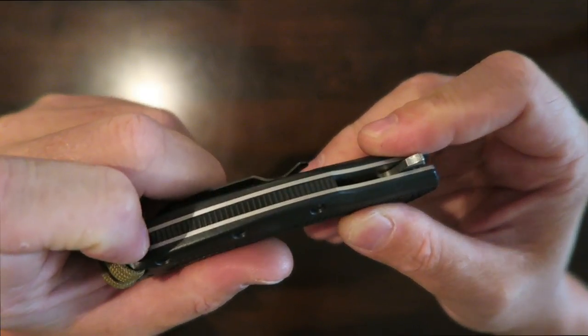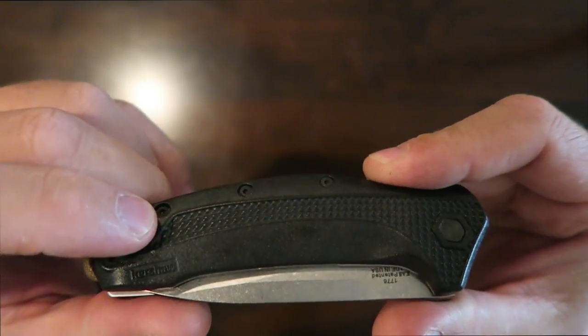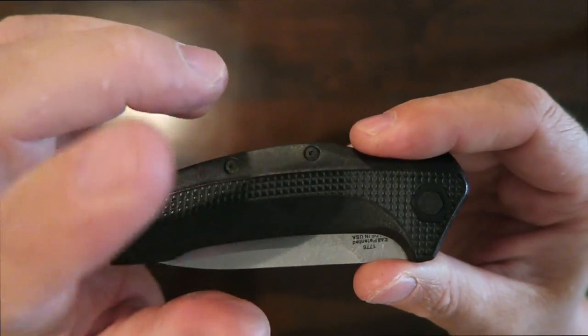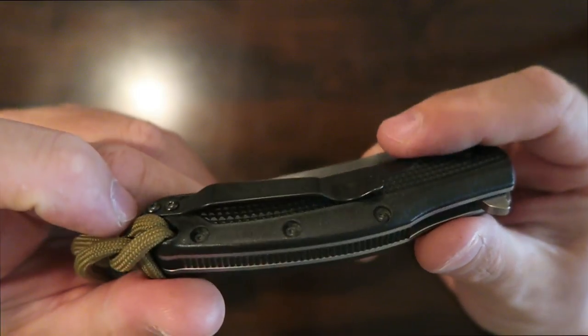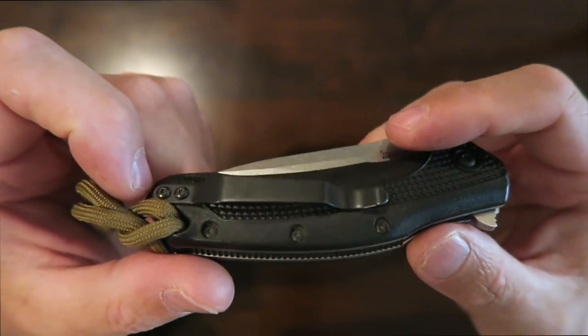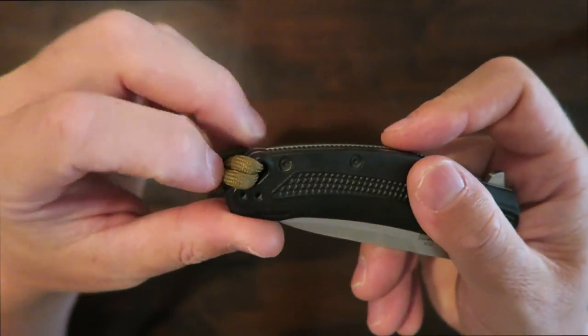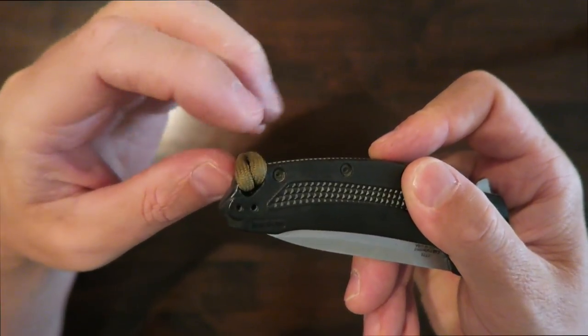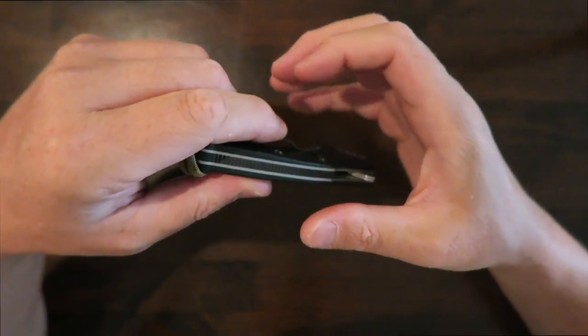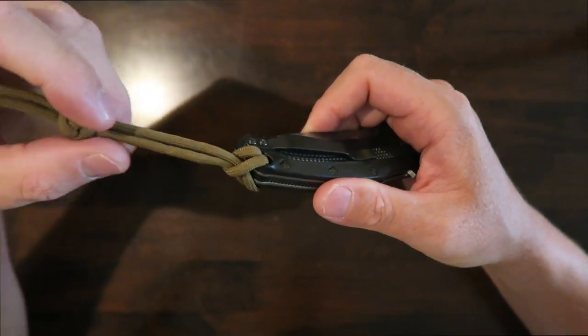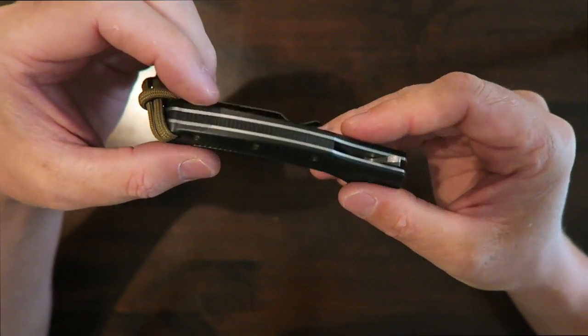You can see that there's some texturing there on the backspacer. Some more texturing here on the GFN handles. These are glass reinforced nylon handles. Nice pocket clip. It's not deep carry but where they've placed this lanyard hole it's very nice again with that rectangular lanyard hole that the Thermite had. It's very nice to wrap a lanyard and then I can just put this down in my pocket and then when I want it I just pull on the lanyard and that works very well.